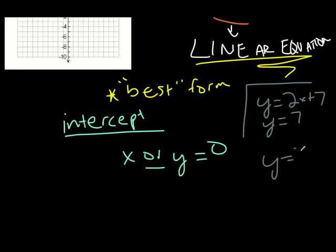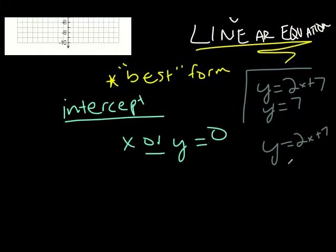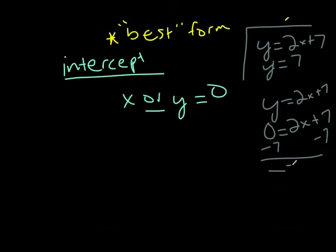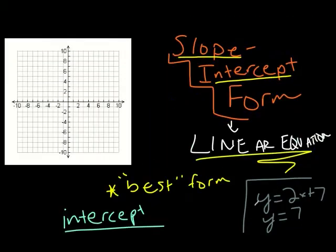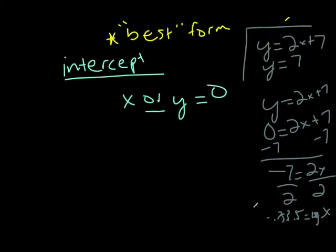If we want to figure out the x-intercept for 2x+7, we make y equal 0. So 0=2x+7, take 7 off both sides to get -7=2x, divide by 2, and we get x equals -3.5. Those are what intercepts are.